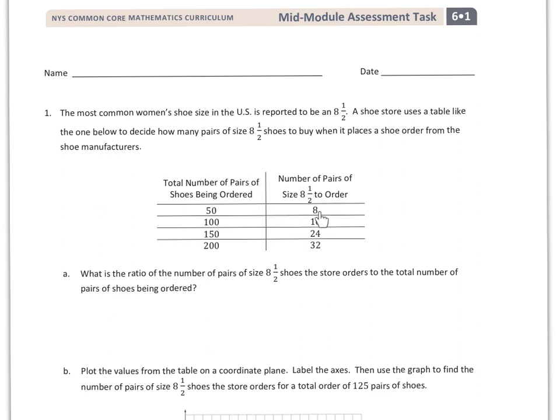The other 42 would have to be sizes that are not 8 1/2, and then if I ordered 100, I'd have 16 size 8 1/2. If I ordered 150, I'd have 24 size 8 1/2s, and if I had 200 boxes of shoes, I would have 32 boxes that are size 8 1/2.